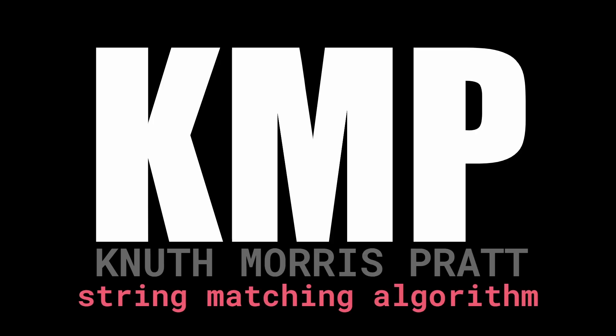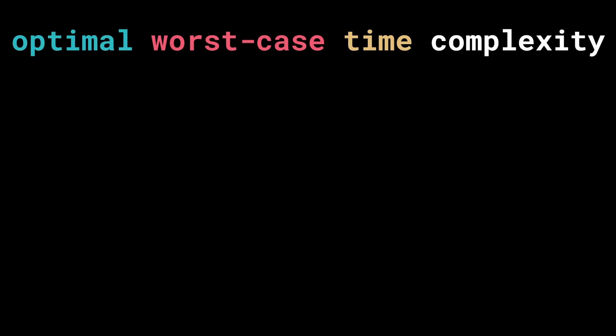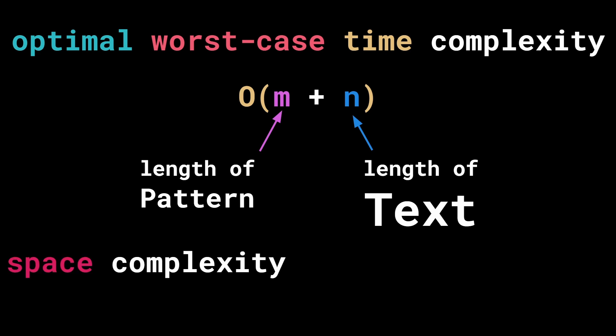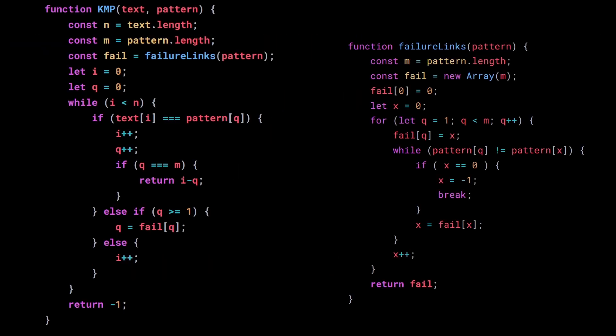The KMP algorithm is a string matching algorithm with the optimal worst case time complexity of O(M + N), where M is the length of the pattern and N is the length of the text. It requires a reasonable extra space of Θ(M). In this video, we will implement it in JavaScript and discuss two different ideas that can lead us to this algorithm.